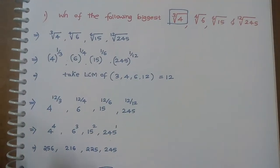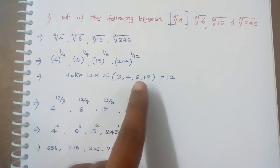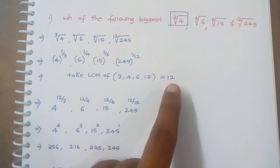Simply what we have to do is take the LCM of 3, 4, 6, 12. So its LCM is 12.